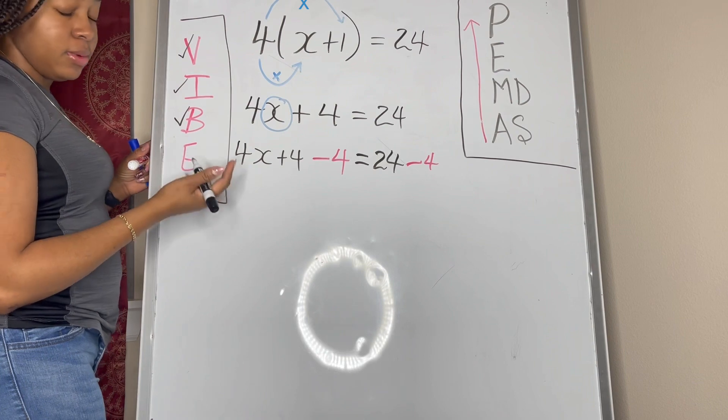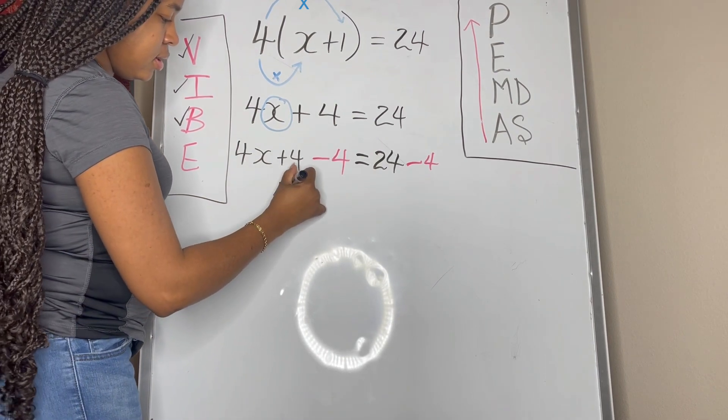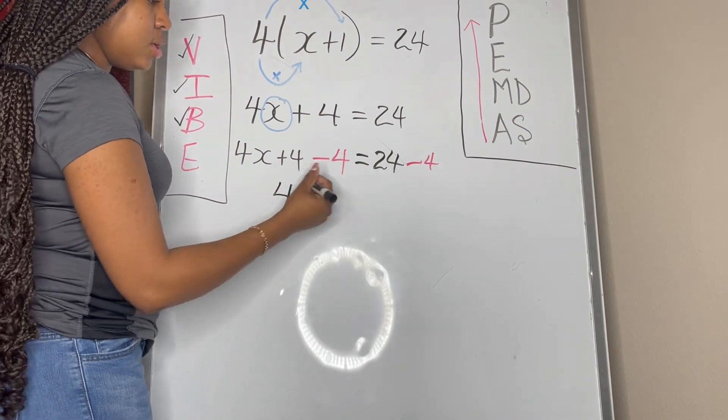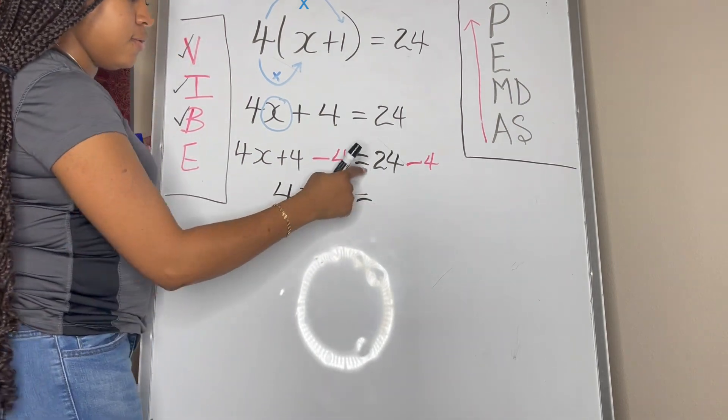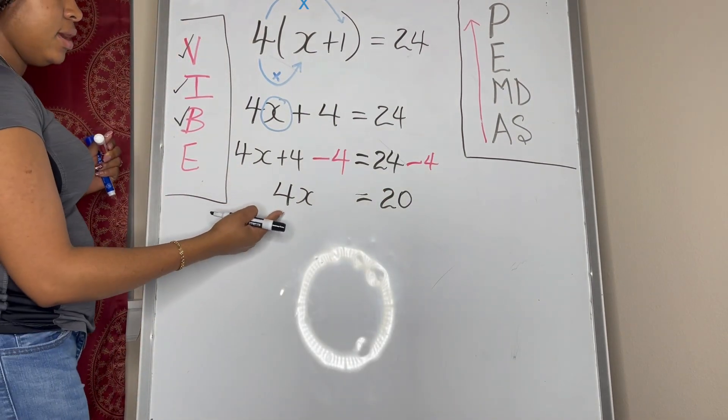So we consider our equality is there, and then we evaluate. So we write this down or simplify it and see what we have from here. So we have 4x plus 4 minus 4, that's just zero, and then we have 24 minus 4, and that's just 20.